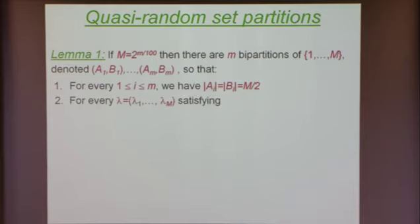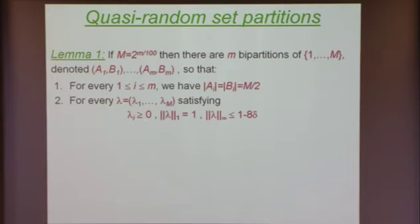The most substantial condition is the following: if you take any m-dimensional vector lambda_1 up to lambda_m — which we think of as a distribution — where each entry is non-negative, the sum of entries is 1, and it's a non-trivial distribution, meaning all entries are bounded away from 1 by at least 1 minus 8 delta for some real number delta.